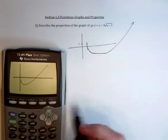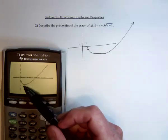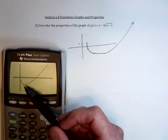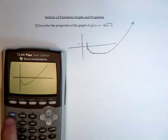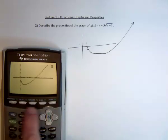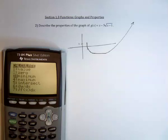So it looks like it's got a minimum value down here. We can use the calculator to find that. If you go to 2nd, calculate, find the minimum.